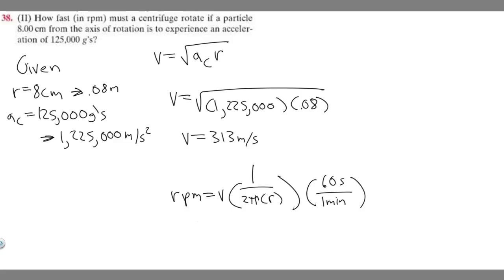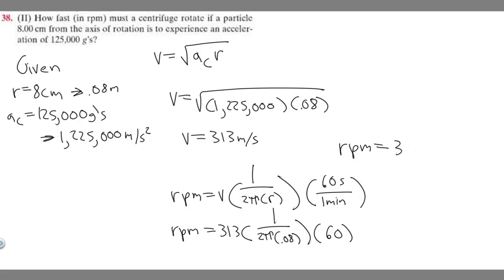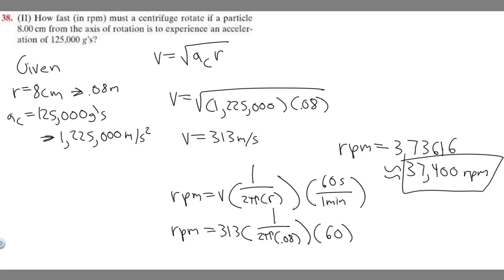So let's go ahead and solve. RPM is equal to 313 times 1 over 2π times 0.08, times 60. If you compute 313 times 1 over 2π times 0.08 times 60, you get 37,361.6. They want you to round, so round it to about 37,400 RPM. This right here is your final answer. Hopefully you found this useful.